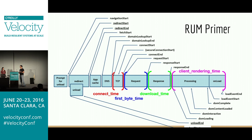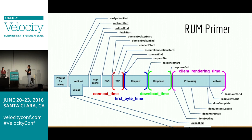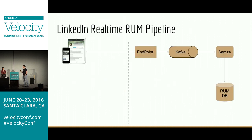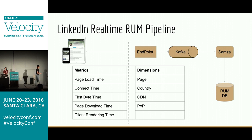Just a quick RUM primer. It's from the Navigation Timing API, at least for browsers. What we consume for this system is connect time — TCP connect time — TTFB (response start minus request start), download time (response end minus response start), and client render time from that moment to onload. Clients do their activity on LinkedIn; we get RUM data from one of our endpoints, send it to Kafka, then consume from Kafka via Samza, and send it to our database. We get page load and connect time metrics at different dimensions: different pages, countries, CDNs, POPs, and more.